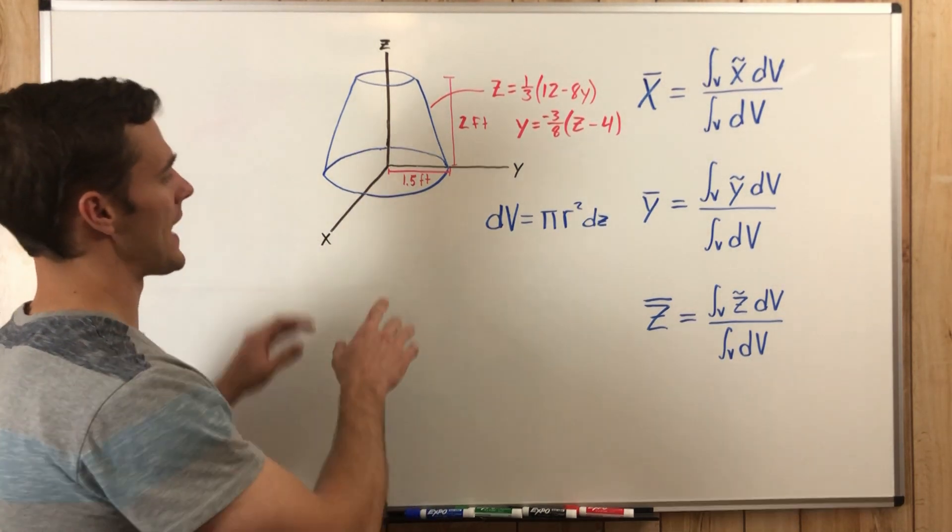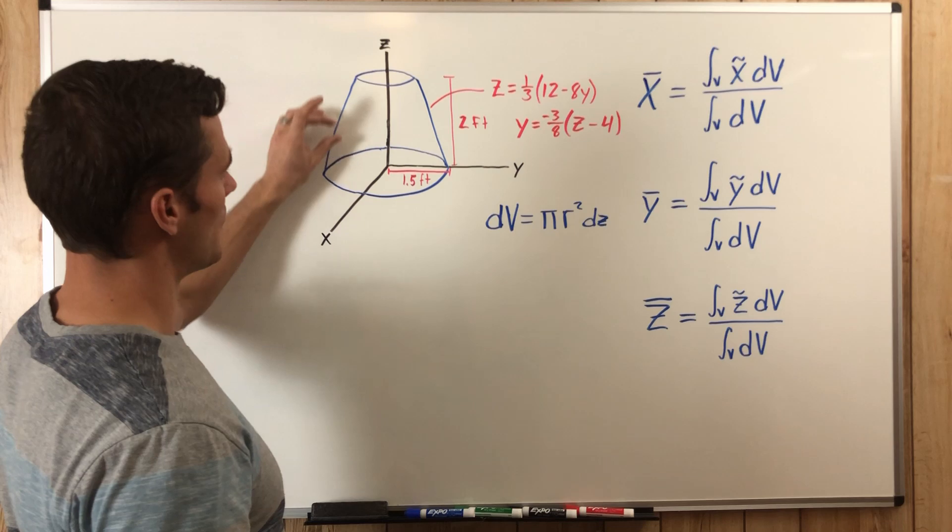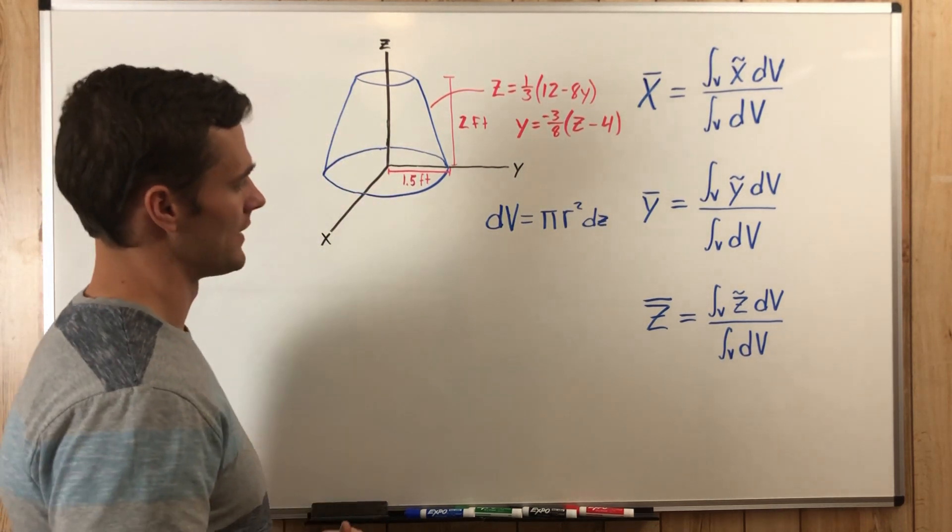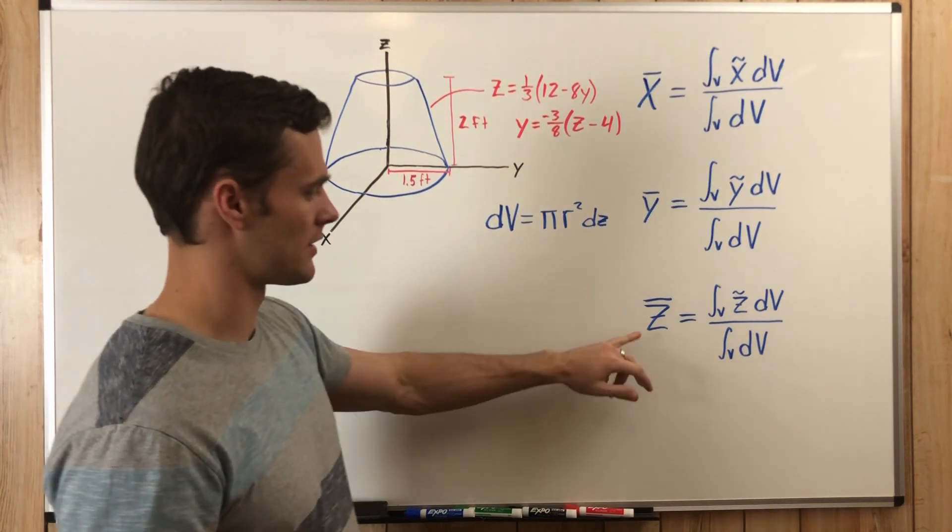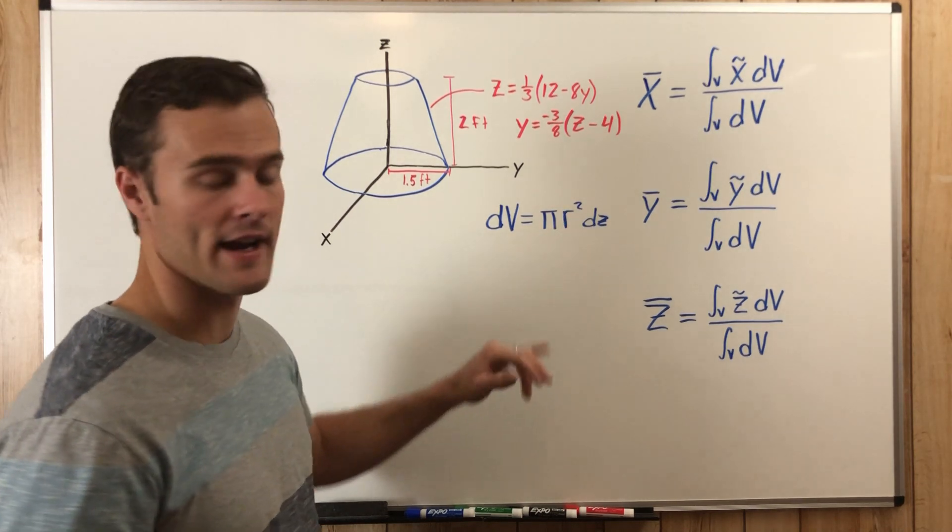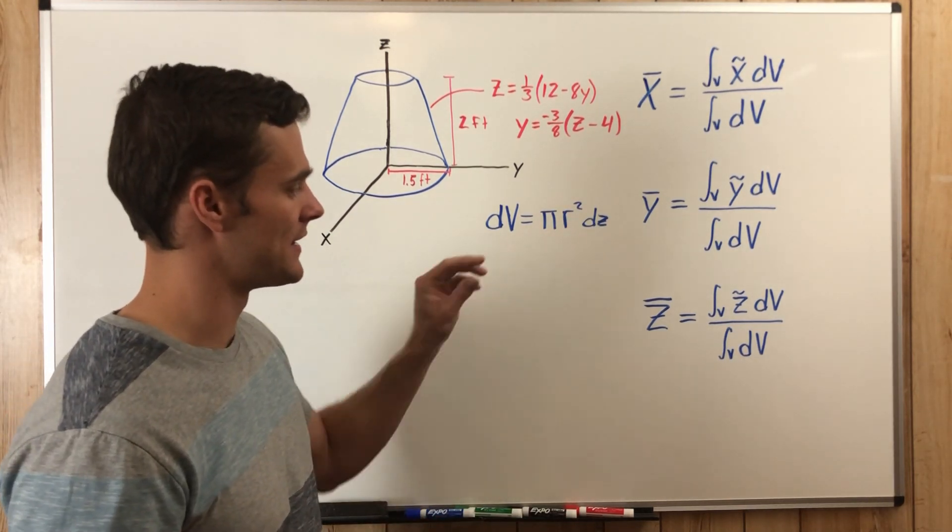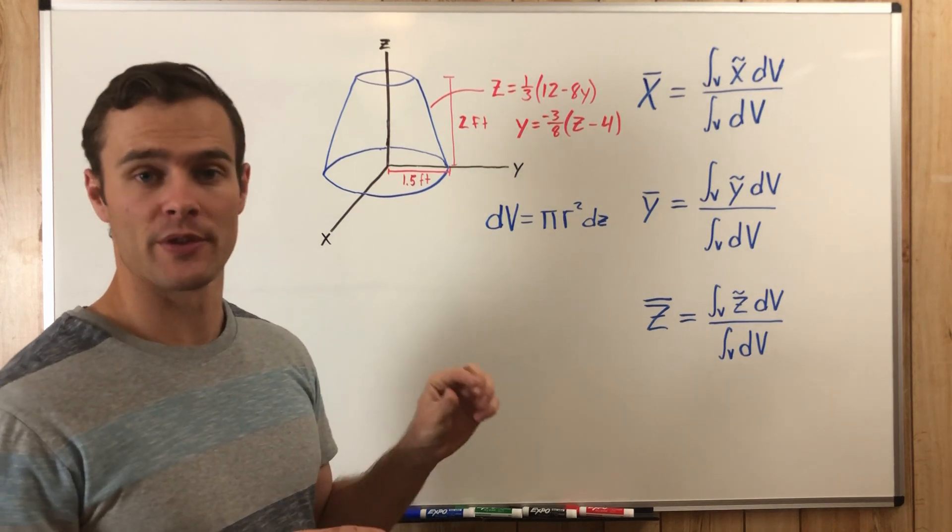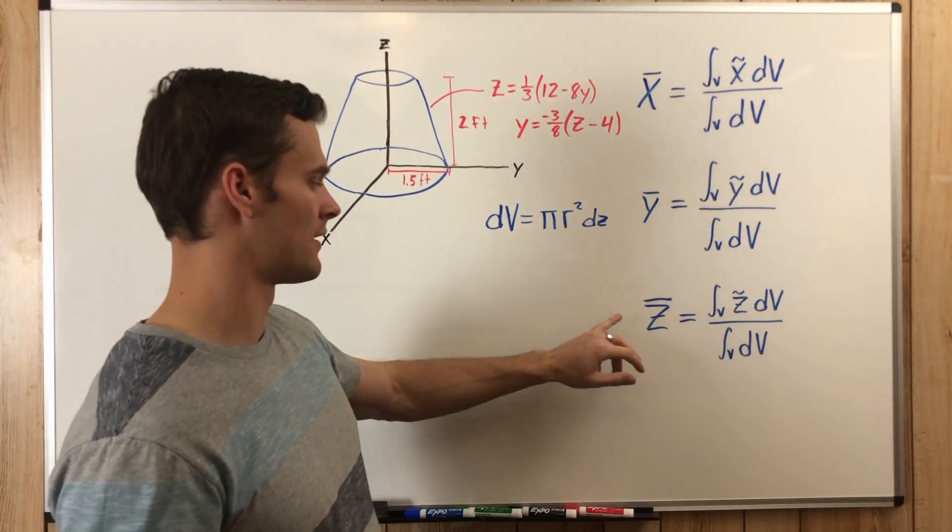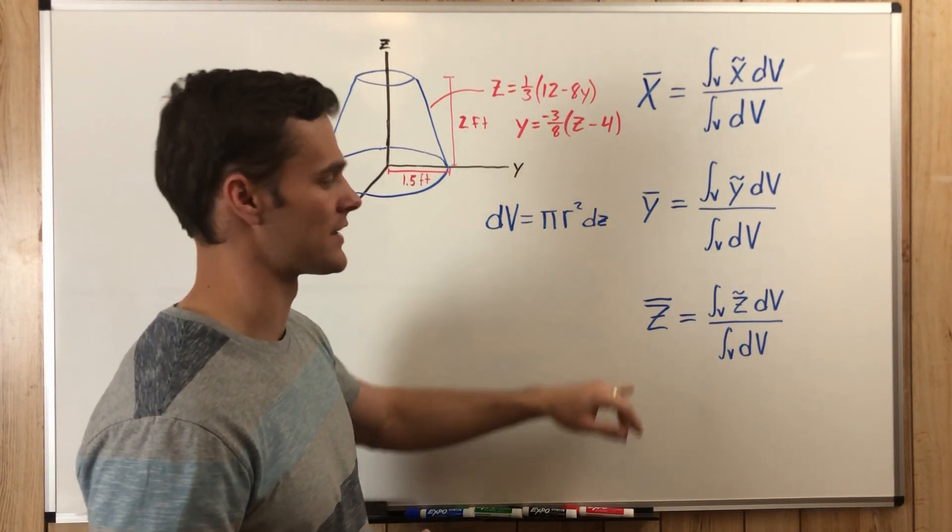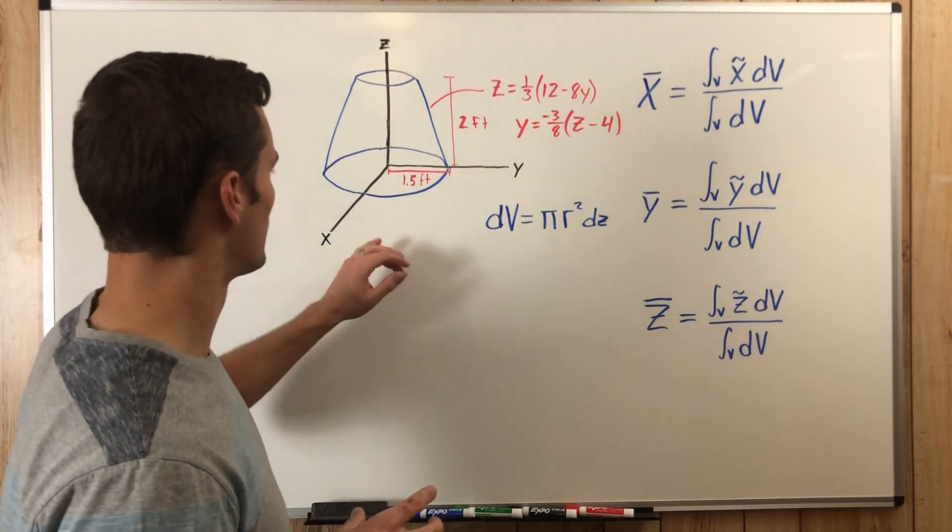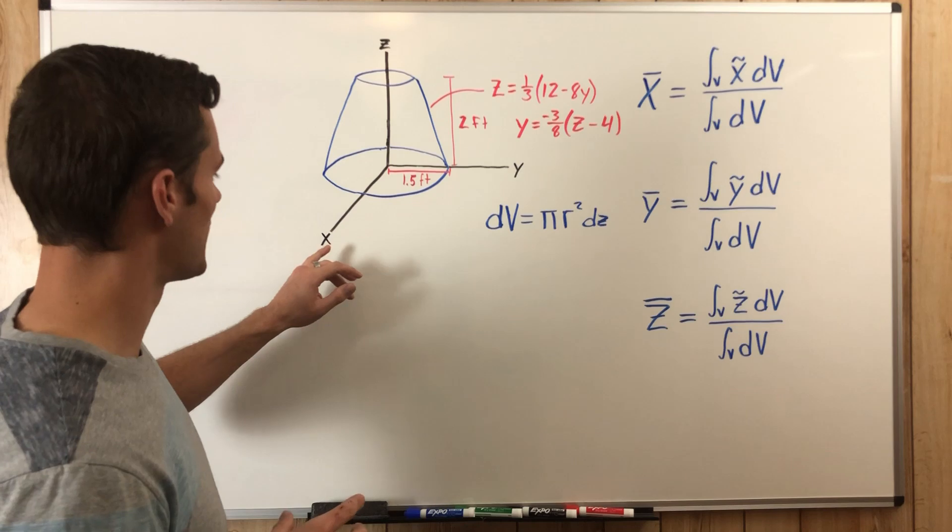And that is because we will be adding up a bunch of thin disks all the way up, well in this case along the Z axis, to find our Z̄. So πr² is the area of the disk and dz is the differential thickness of that disk, and adding all those up gives us the centroid or helps us find the centroid of that volume.